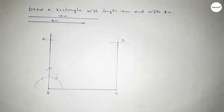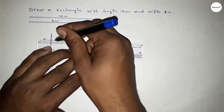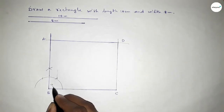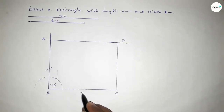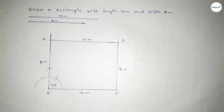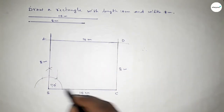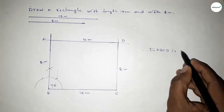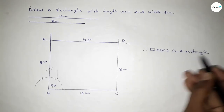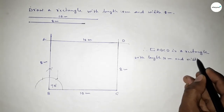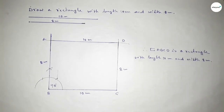Now joining C and D, then joining A and D to get the rectangle ABCD. This side is 10 centimeter, this side is 8 centimeter, this side is 10 centimeter, and this side is also 8 centimeter. Therefore rectangle ABCD is a rectangle with length 10 centimeter and breadth or width 8 centimeter. That's all, thanks for watching. If this video is helpful to you, please share it with your friends.